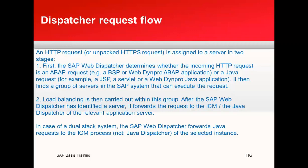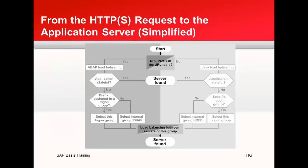The next slide shows how the flow happens when the dispatcher receives a request. Based on the URL table, the request will be sent to ABAP load balancing or Java load balancing. If the application state is stateful, this diagram shows how the exact identification of the target server is performed.